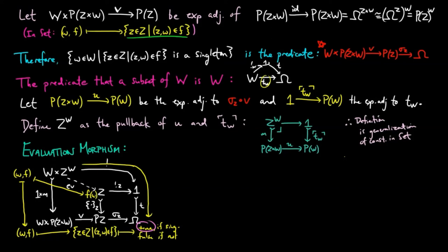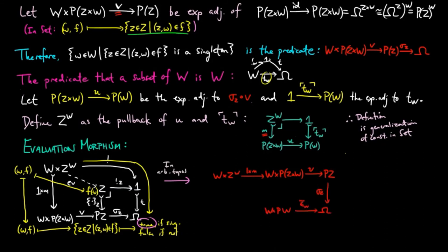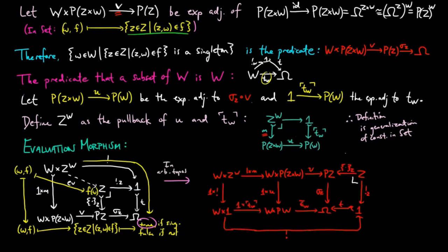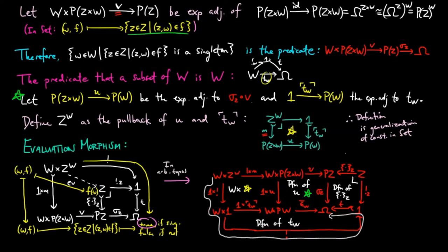Now we need to show that sigma sub z composed with v composed with (1 cross m) factors through the generic sub-object t in a general topos. The right-hand square is a pullback by definition of the singleton morphism and sigma sub z. The middle square commutes by definition of u as the exponential adjoint of sigma sub z composed with v. The left-hand square commutes since it is the product of w by the commuting square in the definition of z to the w, and the bottom rectangle commutes by definition of t sub w. Therefore the two gray paths are equal, inducing a factorization from w cross z to the w to z, and we define the evaluation morphism in any topos to be this factorization.